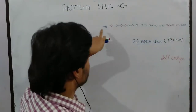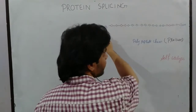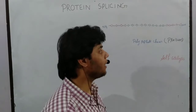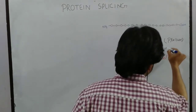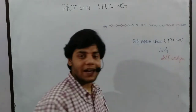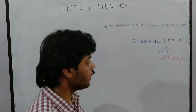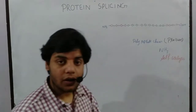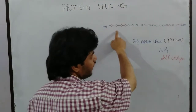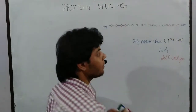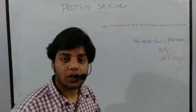Just like in mRNA we have a 5' end and a 3' end, in proteins we have the amino group at the N-terminus end and the carboxylic group at the C-terminus end. The amino group has a lone pair of electrons which acts as a nucleophile and will nucleophilically attack a carbon. The functional amino acids are called extein, analogous to exons in mRNA.